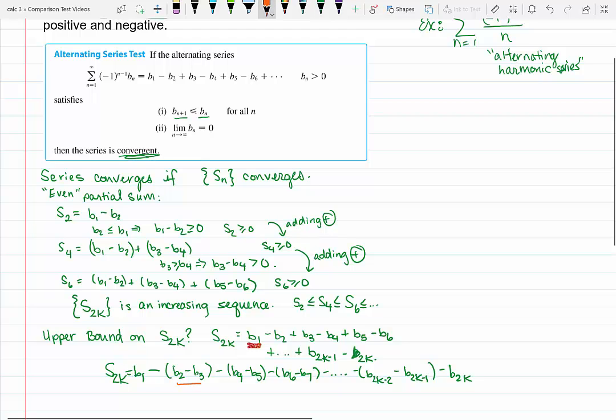So B2 minus B3 is a positive number that I'm subtracting. So I'm subtracting positive numbers or greater than or equal to. So every one of these, because B6 is bigger than B7, what I've subtracted off is a number, so on and so forth, and B2k also was positive. So I've taken B1 and I've subtracted off all these numbers.